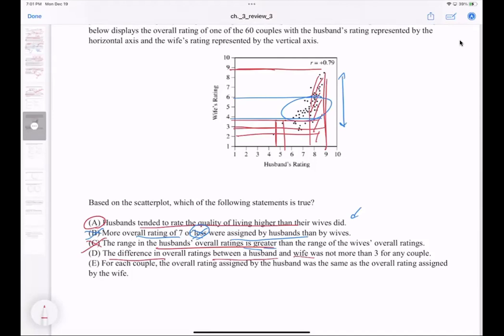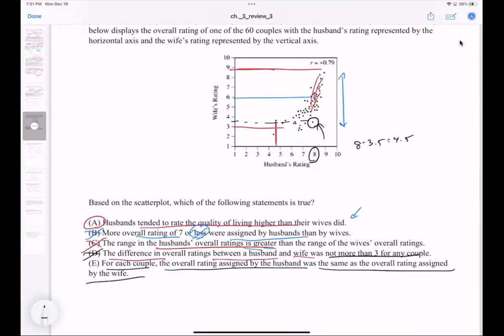The difference in overall ratings between husband and wife was not more than three. I can pick one point - this point right there. It seems like husband rating was around eight but the wife's rating was around 3.5, so eight minus 3.5 is definitely more than three. So it is more than three. For each couple, the overall rating assigned by husband was the same as wife - no, that's absolutely not true. Husband rating was eight, and wives' rating was 3.5. If E was true, they should have both rated themselves the same, but they didn't. So it's A.